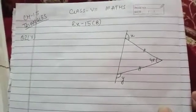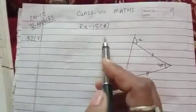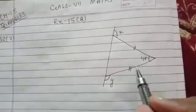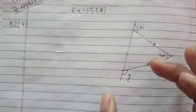Hello everyone, this is Class 7th Maths, Exercise 15B, Question Number 2, Part 5. As you know, these questions we have done by using properties of isosceles and equilateral triangles.